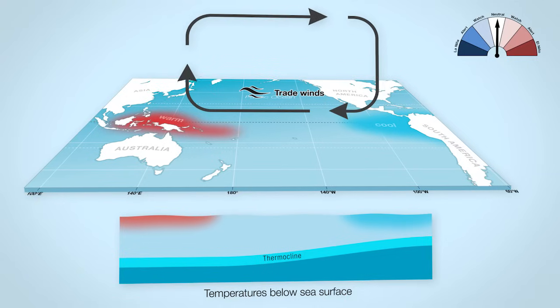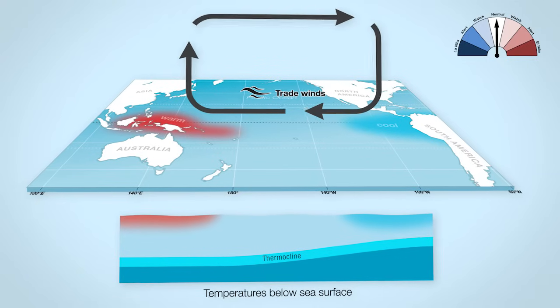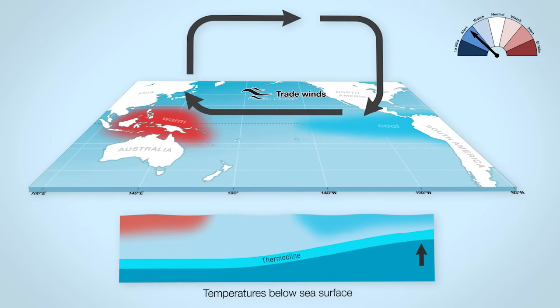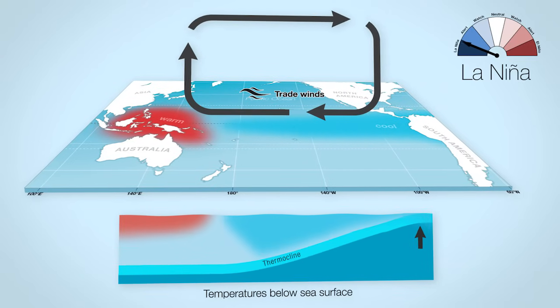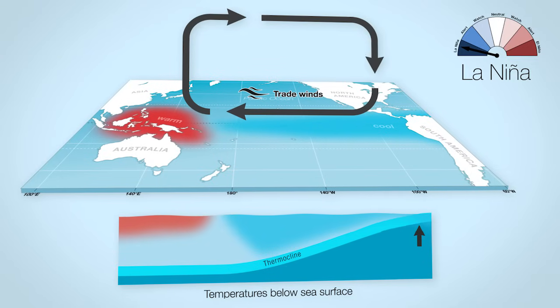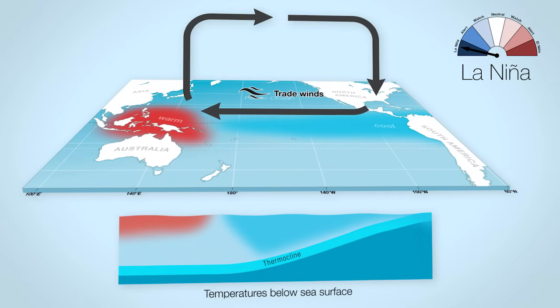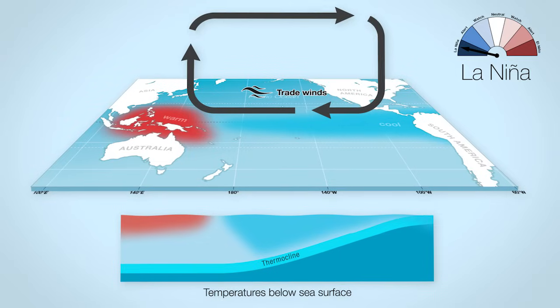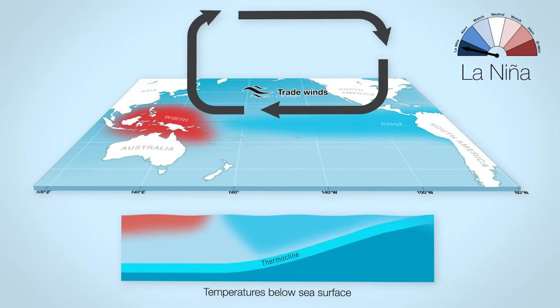When we move into La Niña, it's a bit like the neutral phase has gone into overdrive. The trade winds blow harder, expanding the warm pool on the Australian side of the tropical Pacific and cooling the oceans towards South America. This increases the east-to-west temperature difference and makes the Walker Circulation even stronger, and the trade winds blow even harder again.